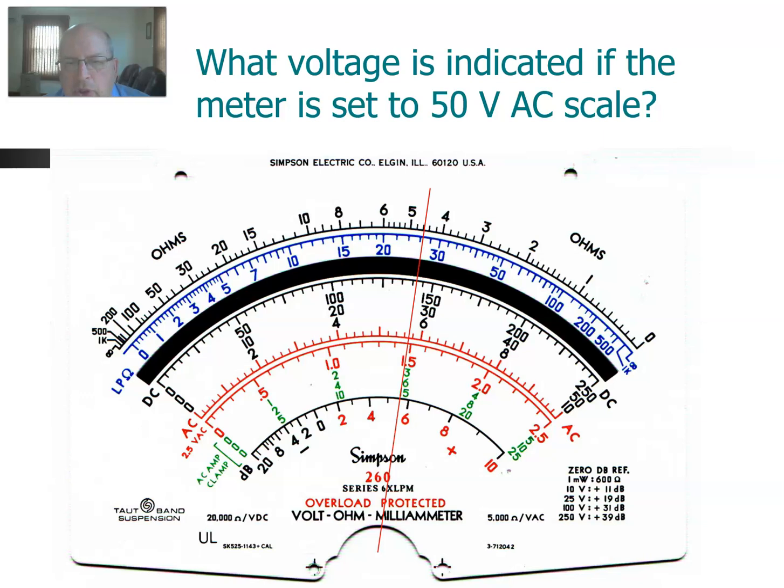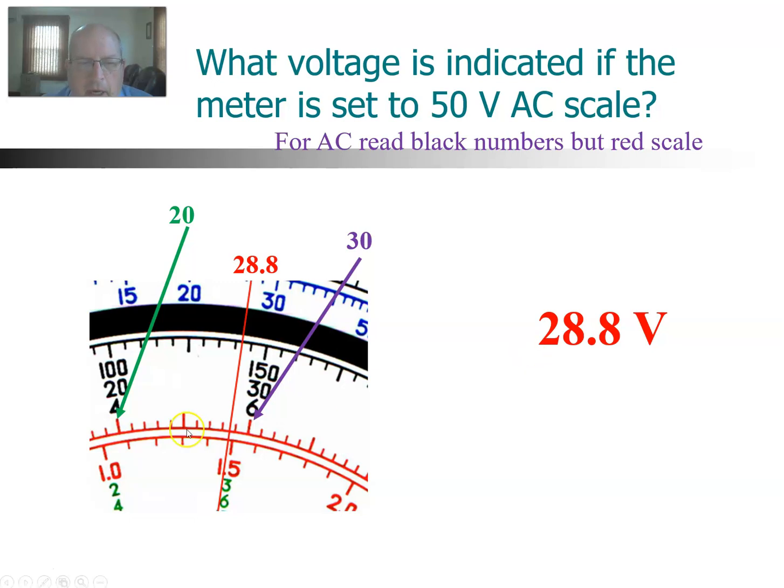What happens if we go to AC? With AC, we're going to do things a little bit differently. With AC, we're going to read the black numbers, just like we did a moment ago. But this time, we're going to read the red scale. So reading it a little bit differently, reading off the red scale because it's AC.